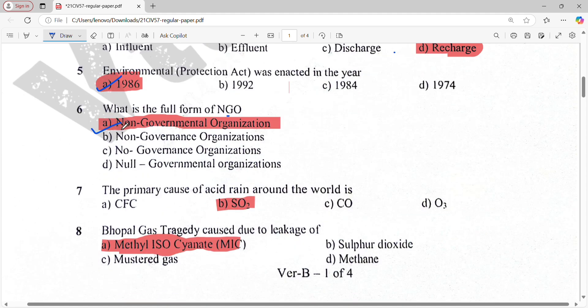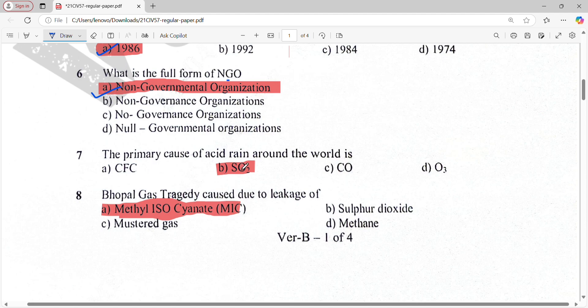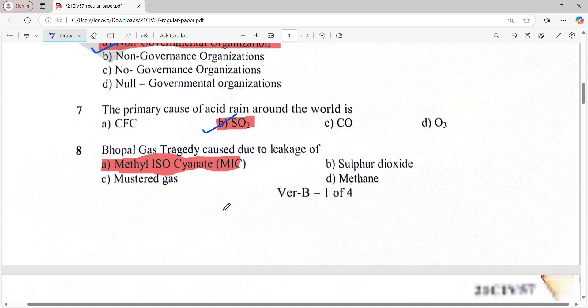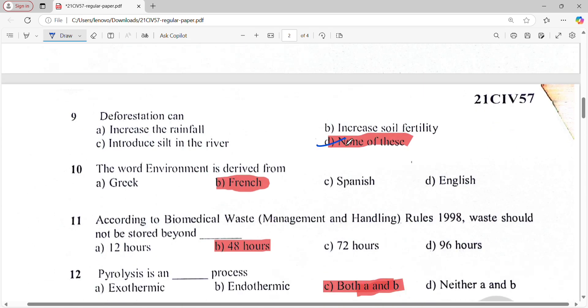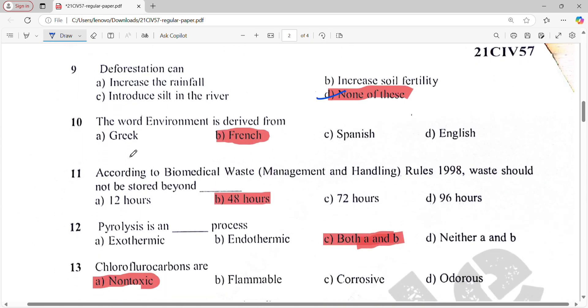The primary cause of acid rain around the world is sulfur dioxide. Bhopal gas tragedy was caused due to leakage of MIC. Deforestation: the answer is none of these. The word environment is derived from French.